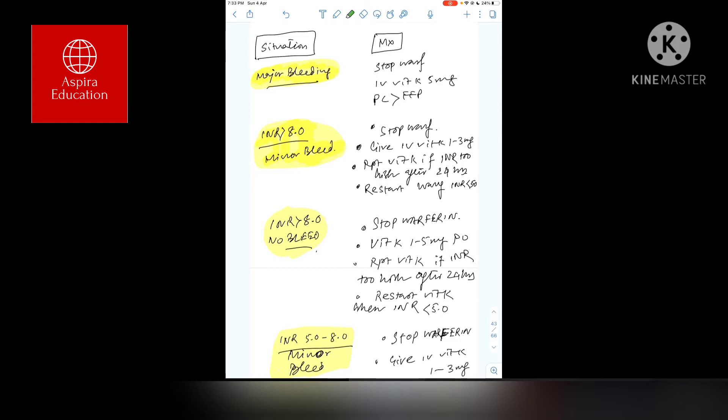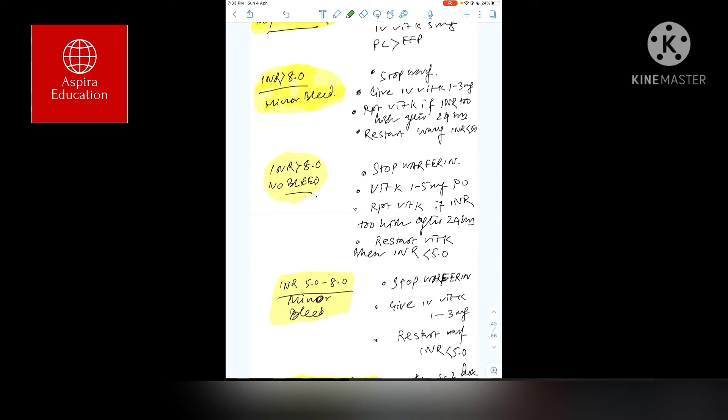Third scenario: INR more than 8, no bleeding. Stop warfarin. Here you give vitamin K to reverse, but it's oral vitamin K, don't go for IV. That's 1-5mg. Repeat vitamin K oral or IV depending on INR or bleeding complications. Important point: recheck INR after 24 hours and restart warfarin whenever the INR value is less than 5.